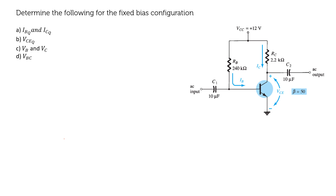The question is to determine the following for the fixed bias configuration. We have been given the diagram for fixed bias configuration and we have to find out: Part A — the base current IB and collector current IC at the quiescent point, IBQ and ICQ; Part B — VCEQ; Part C — VB and VC; and Part D — VBC. Let us begin the problem by writing the parameters given.